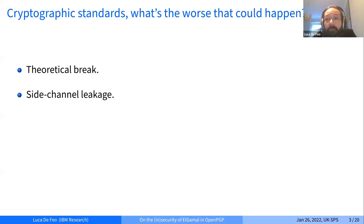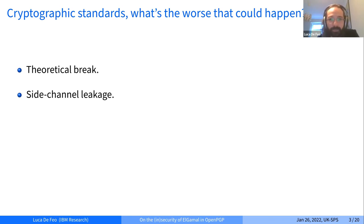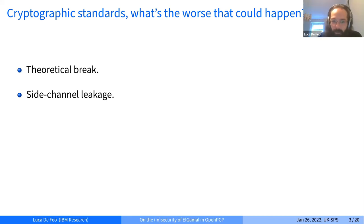A second problem is that the specification may be safe but implementations may leak information through side channels. This is a whole area of research and it is very difficult to protect against all kinds of side channel leakage. Depending on your threat model you need to be careful how you code things. Even when you think you've protected against all of them, a new side channel comes up and you need to patch — it seems to be a never-ending cycle.